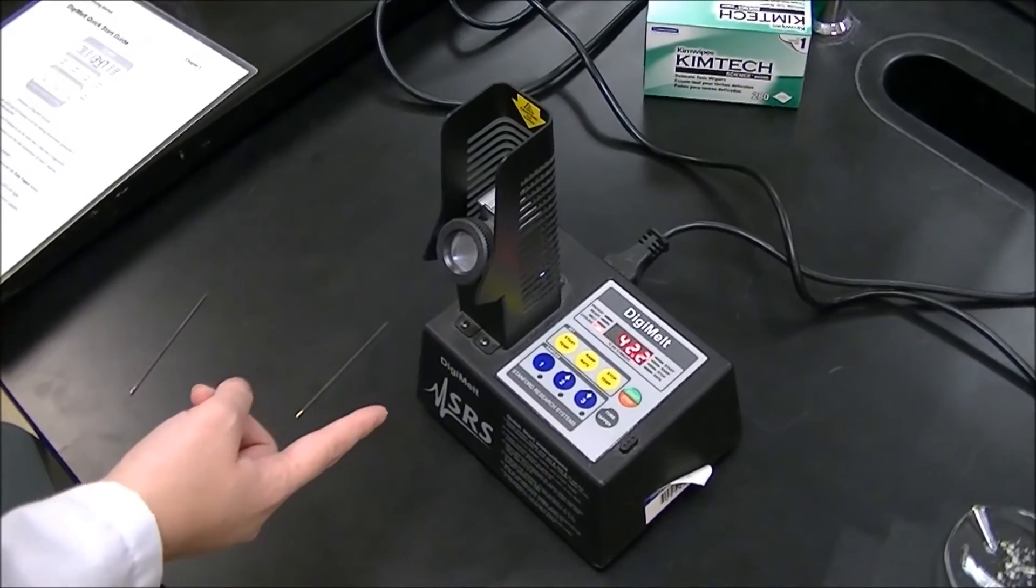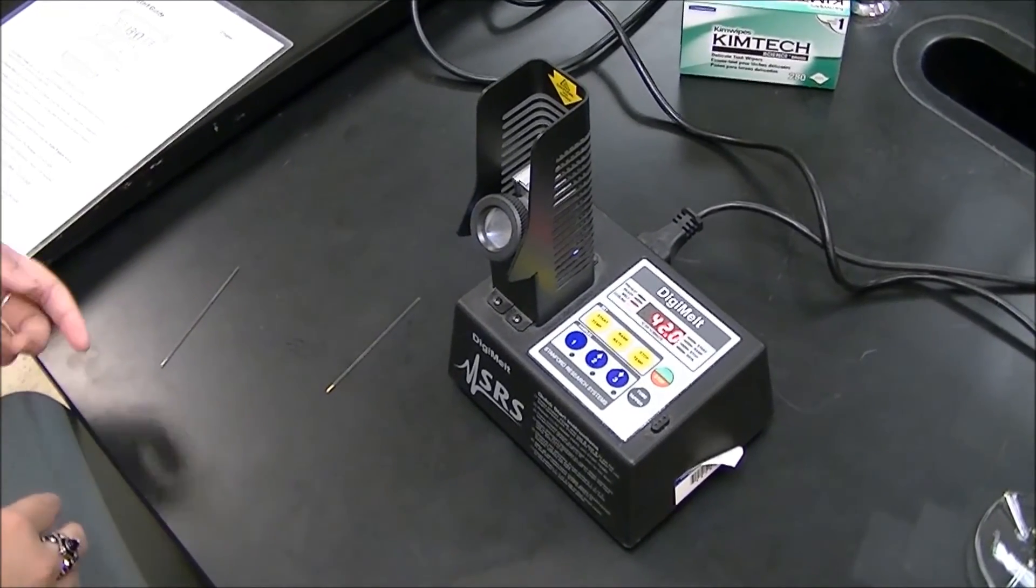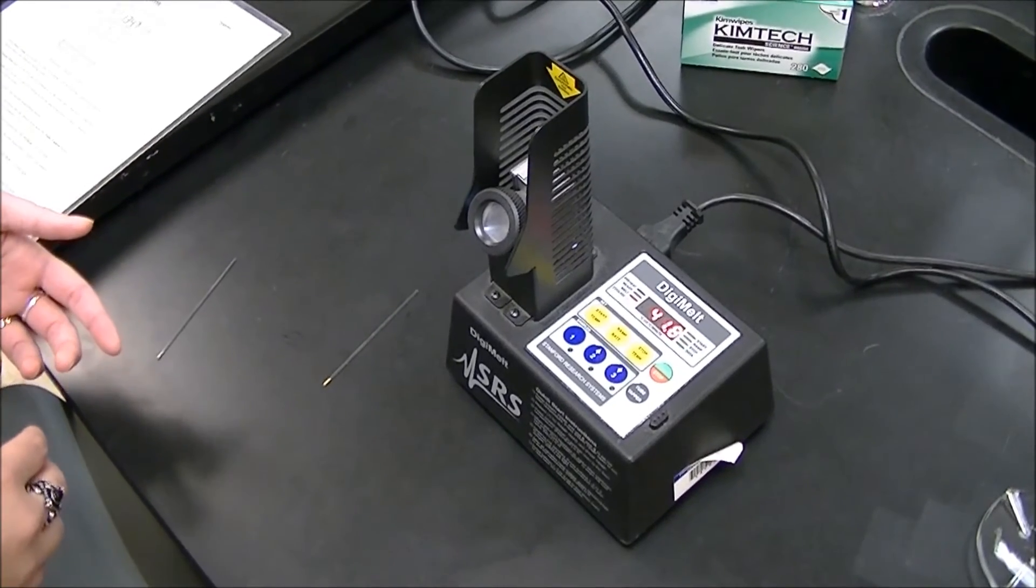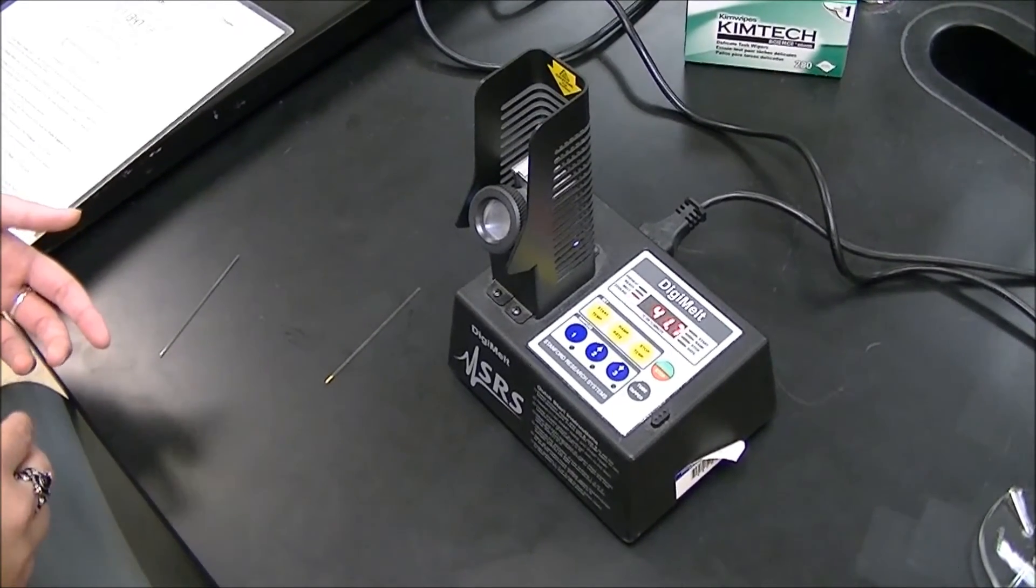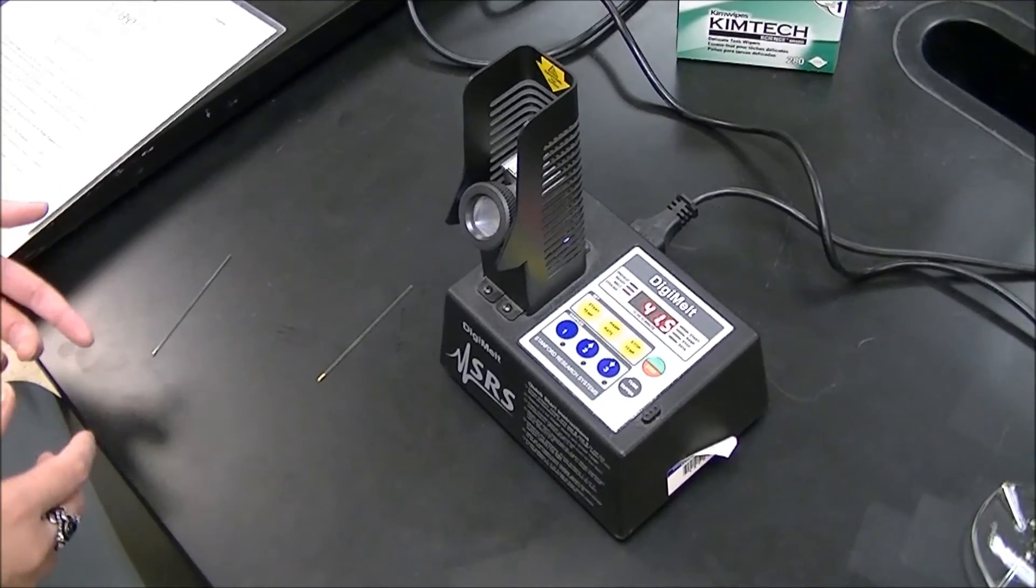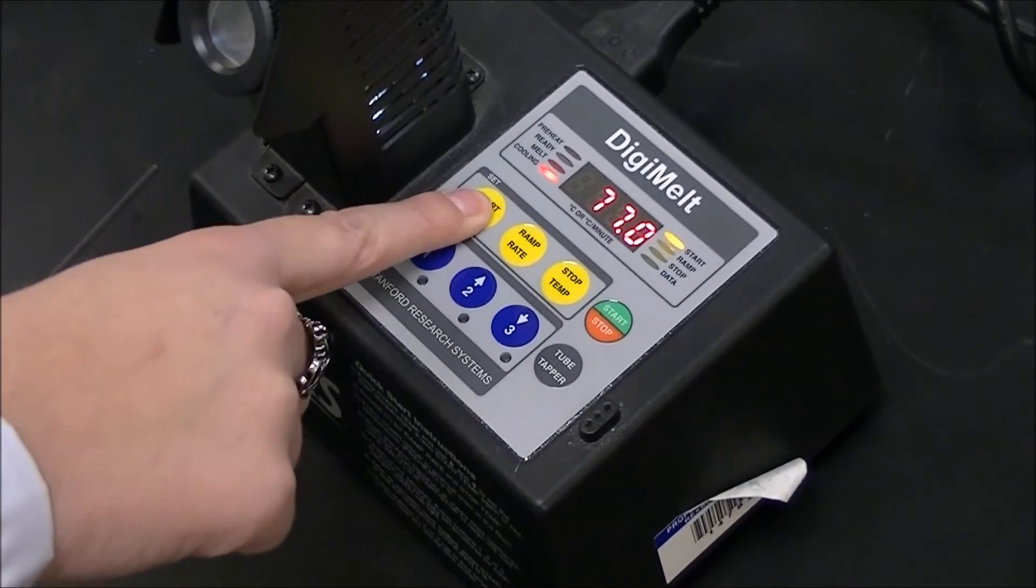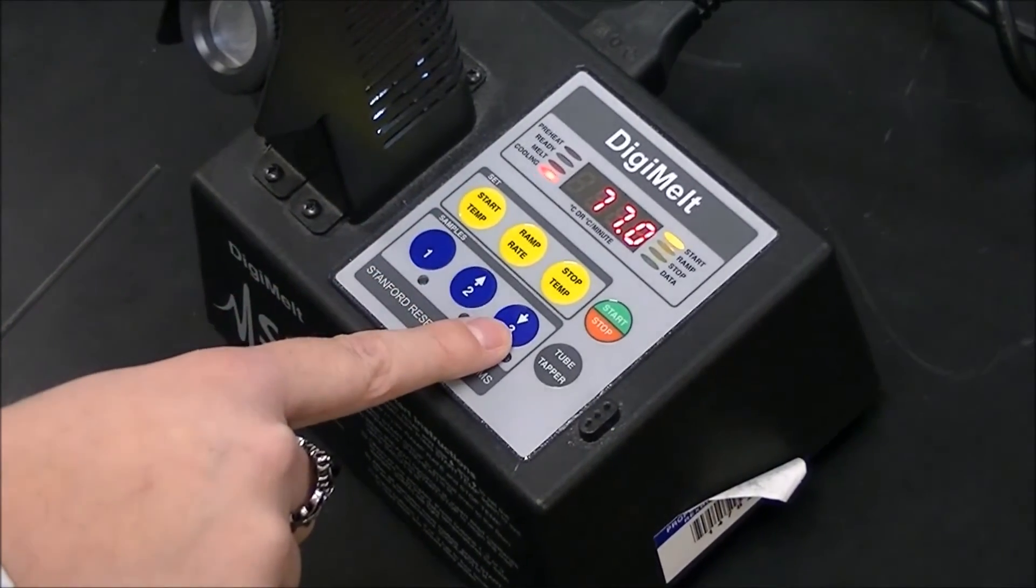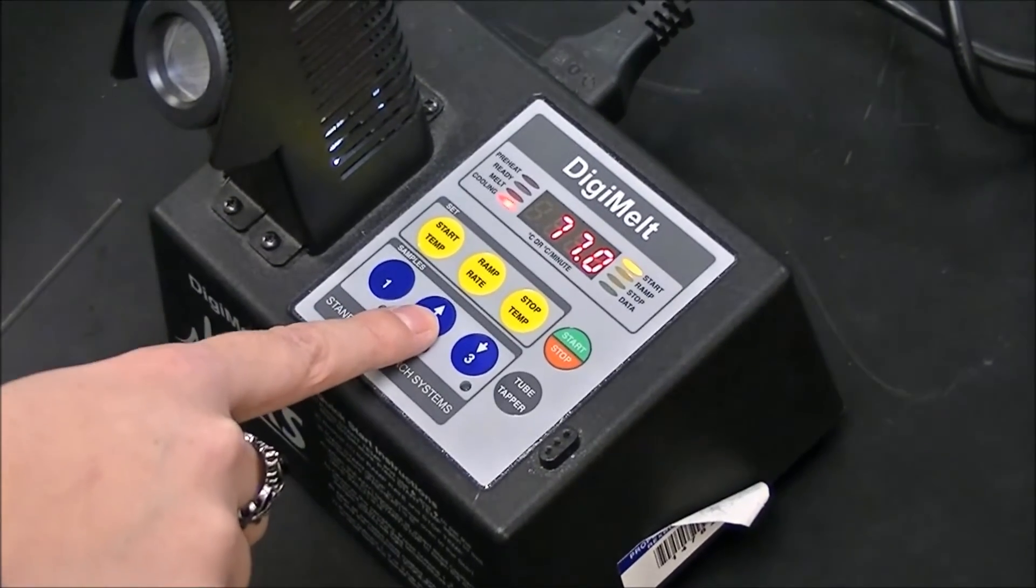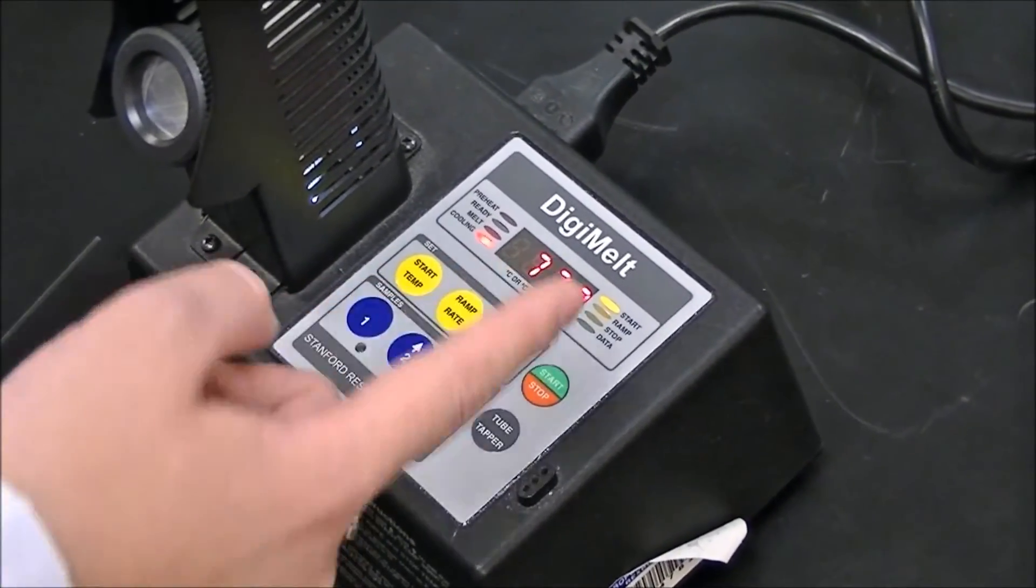So this is the digi melt, and we're going to be sampling our 9-fluorenone sample first. 9-fluorenone has a melting temperature between 80 and 83 degrees Celsius. We're going to choose start and stop temperatures that are slightly lower and slightly higher than that range. Push the start temperature button and use the up and down buttons to make sure that this number is slightly lower than the 80 degrees Celsius for 9-fluorenone. So we set ours to 77.